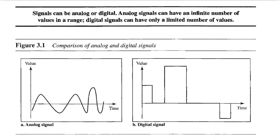Signals can be analog or digital. An analog signal can have an infinite number of values in a range. A digital signal can have only a limited number of values. Comparison of analog and digital signals: analog signal and digital signal.